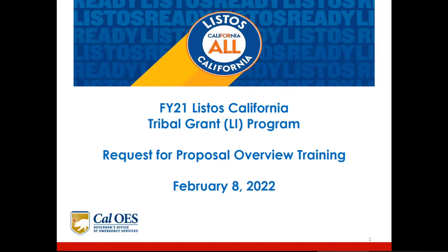All questions concerning the RFP, the process, or programmatic issues must be submitted in writing by email to listosgrants@caloes.ca.gov. We are only able to respond to technical questions about the RFP during the time between the publication date and the completion of the RFP process. With that said, I'm going to go ahead and hand the training over to Waheeda. She's going to present the request for proposal overview training.